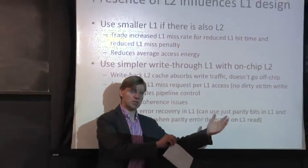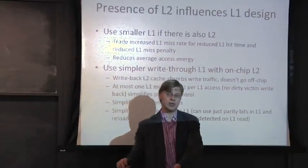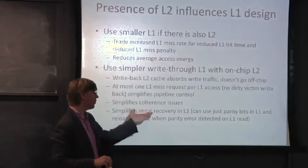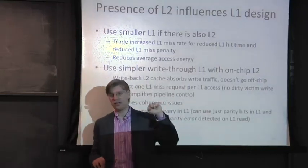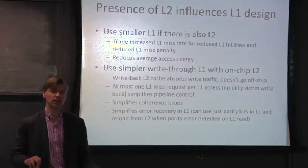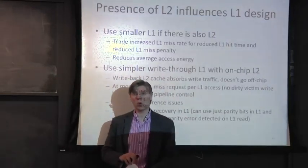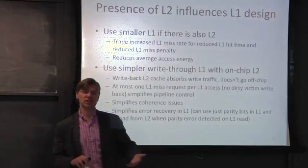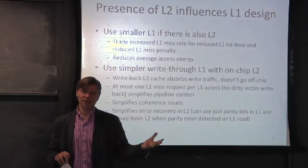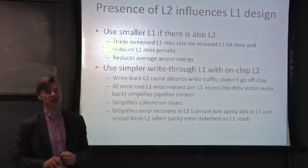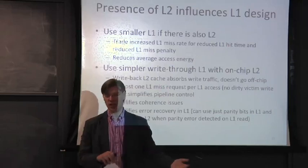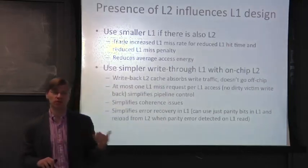You can push complexity from the level one into the level two. You still have to do invalidations in the level one, but before — with a write-back L1 — you'd have had dirty data, requiring you to find a victim, generate an eviction, and actually evict that line. With a write-through level one, you just have to invalidate — it's much easier to blast away lines than to blast away lines and figure out how to evict dirty data. This is much less disruptive to the main processor pipeline.